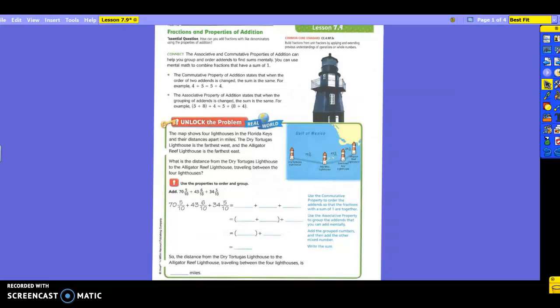Let's read the first problem they want us to do. The map shows four lighthouses in the Florida Keys and their distances apart in miles. The Dry Tortugas Lighthouse is the farthest west, and the Alligator Reef Lighthouse is the farthest east. You can see that here in the map. Here's the farthest west, farthest east. You know that because there is a map, and so north is always up top, south, east on the right, and west on the left. We want to know, what is the distance from the Dry Tortugas Lighthouse to the Alligator Reef Lighthouse traveling between the four lighthouses?